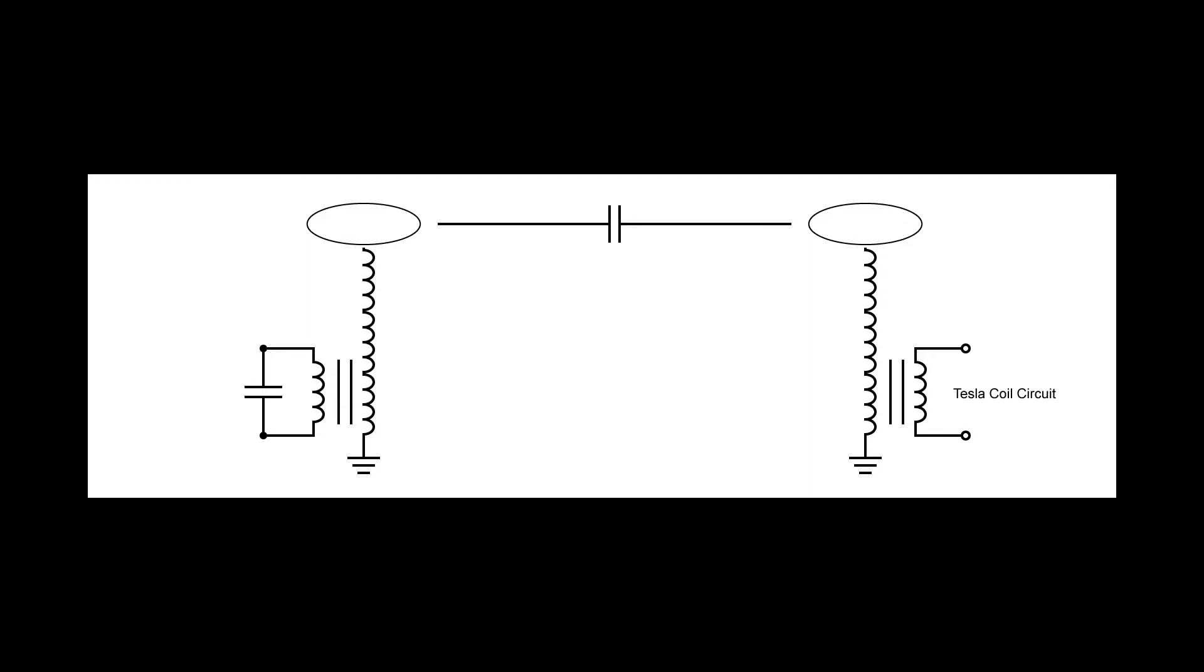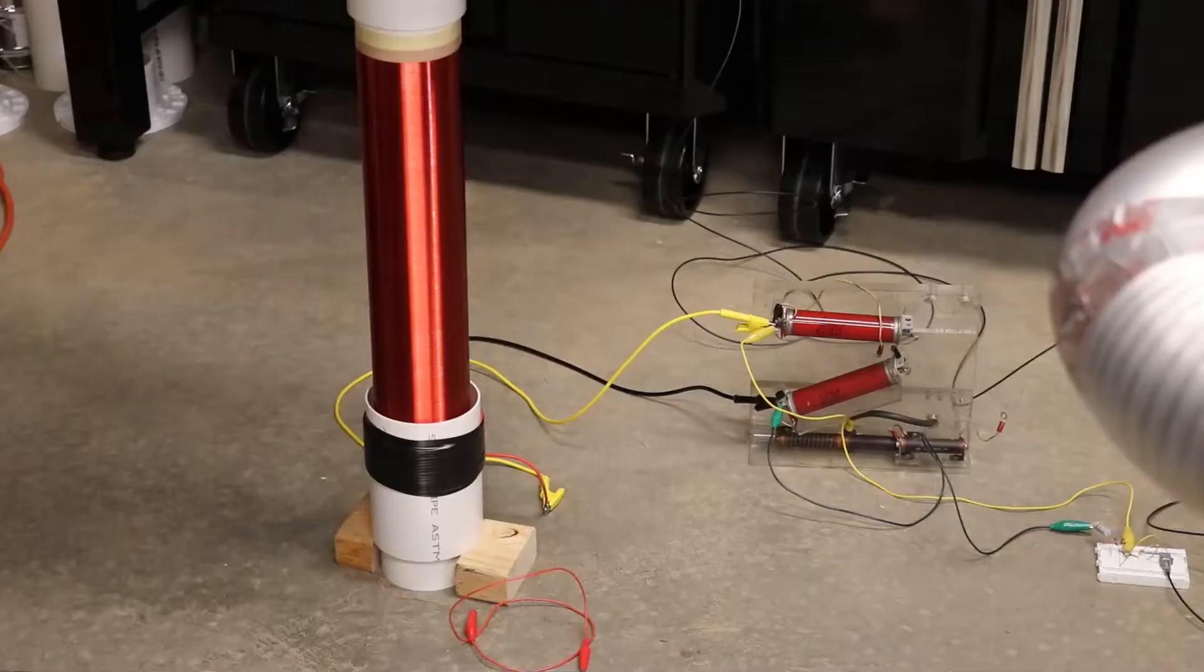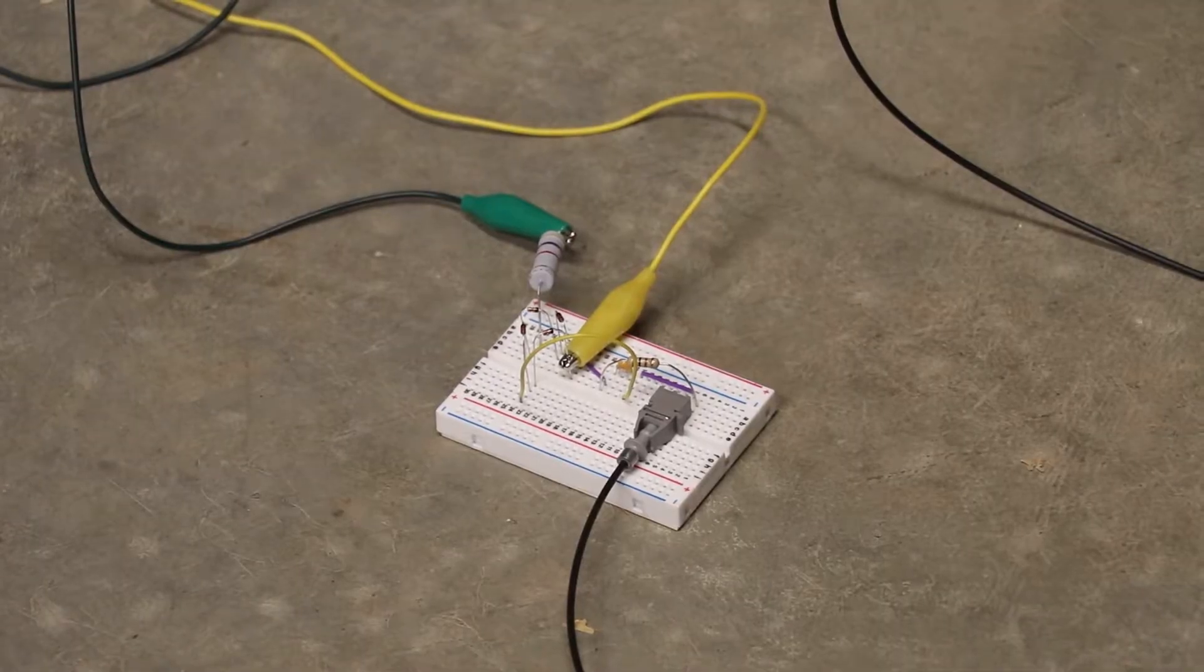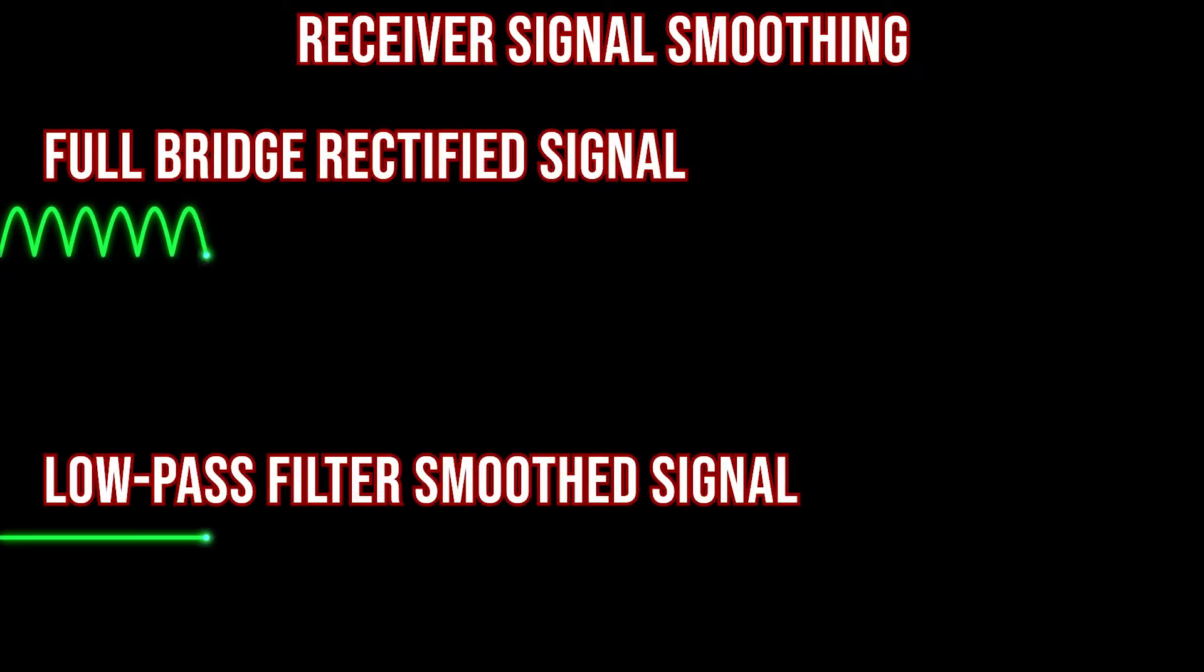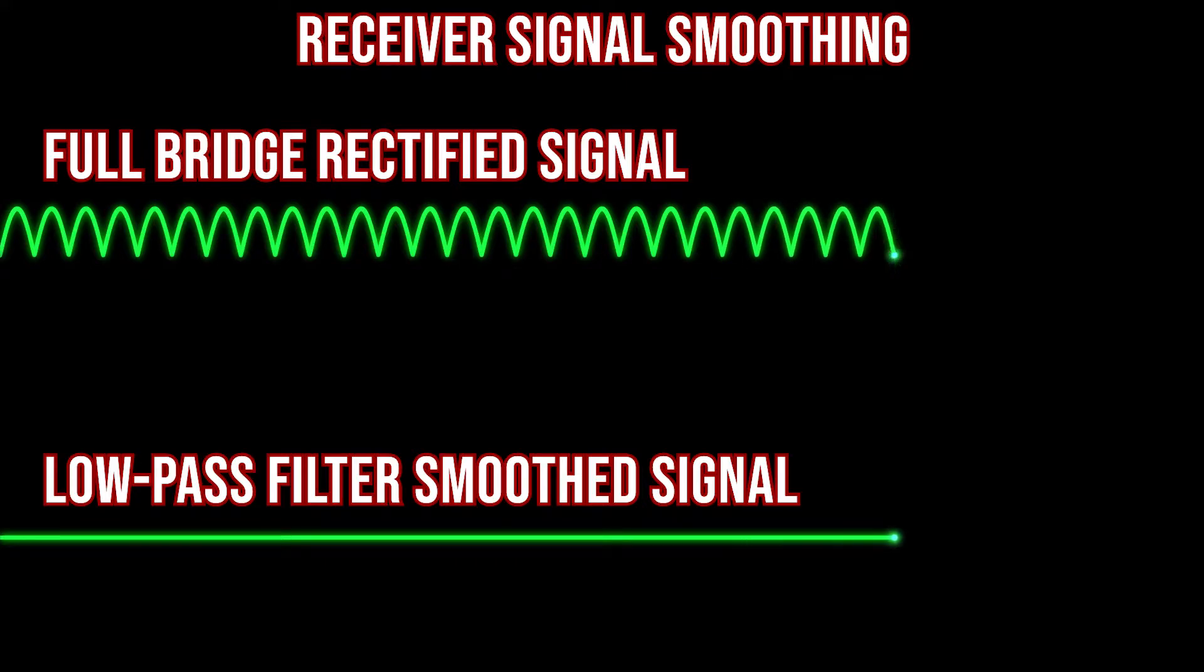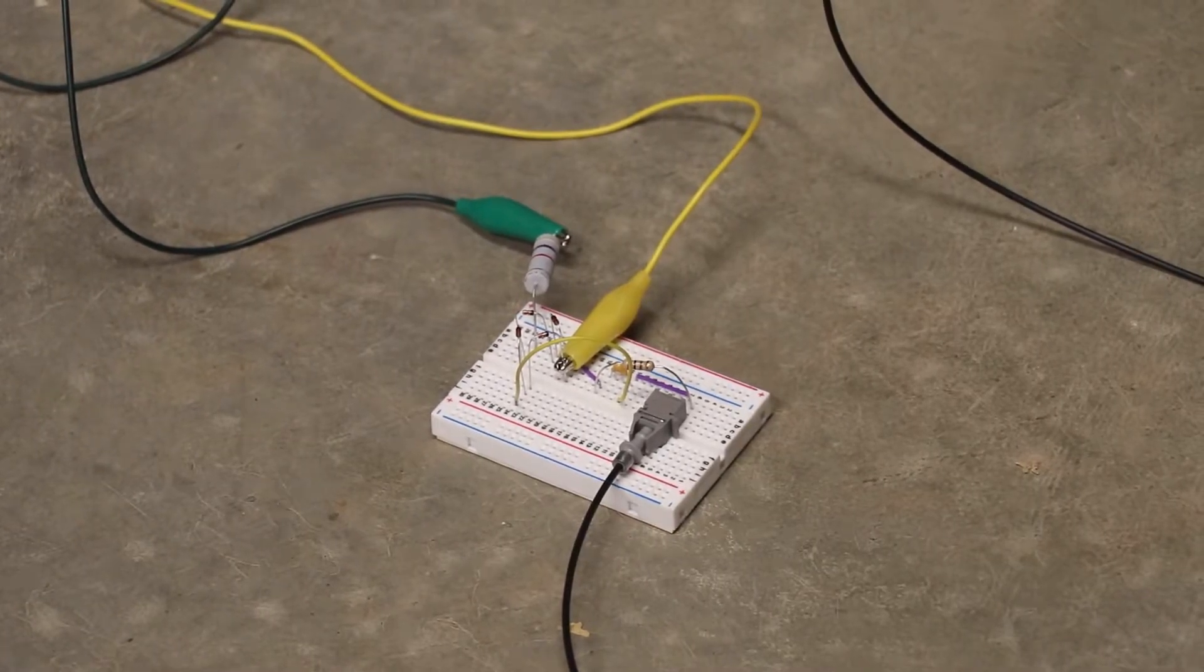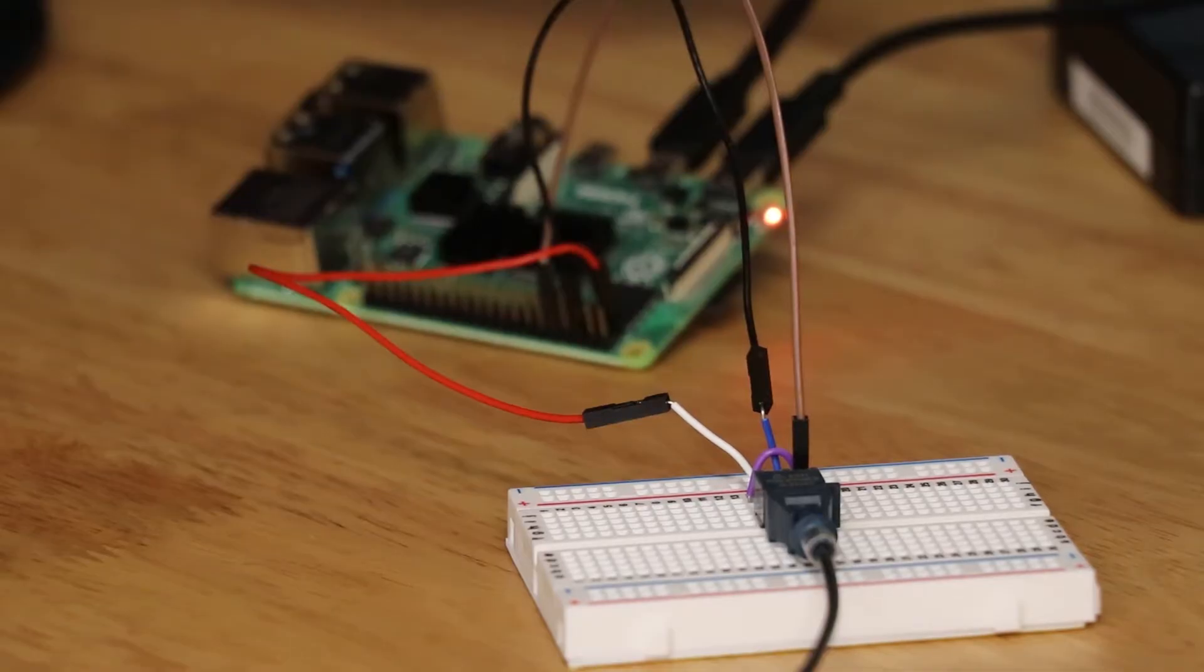Then the other Tesla coil receives some of that power through resonant coupling. That then gets stepped back down to low voltage, rectified, and then sent through a low-pass filter to remove the roughly 200 kilohertz resonant frequency oscillations of the Tesla coil. And then that signal is used to trigger another optical transmitter. And finally, that optical receiver is connected to the RX pin of the Raspberry Pi that's the receiver.